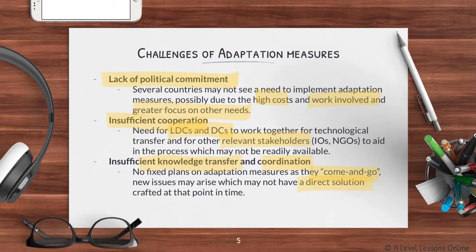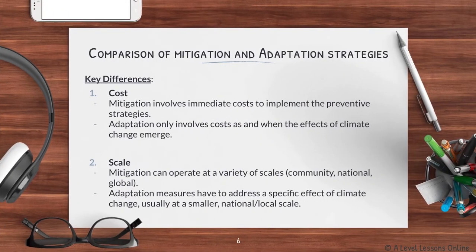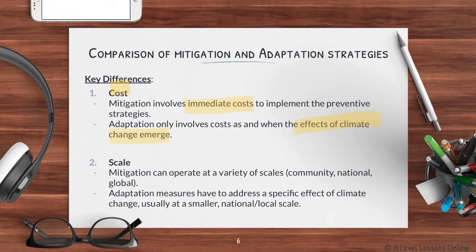Comparing mitigation and adaptation strategies, the first key difference is cost. Mitigation involves immediate cost to implement preventive strategies, while adaptation only involves cost when the effects have actually set in. With mitigation, we're planning ahead, which usually involves a much higher cost, and we are still unsure whether the solution may even be effective in curbing the effects of climate change.